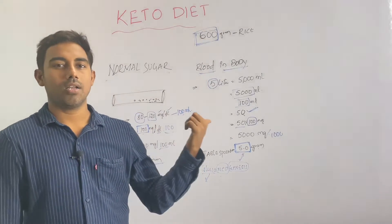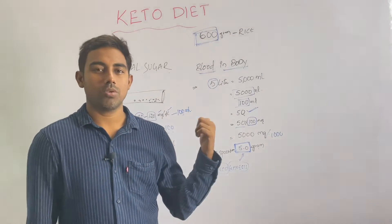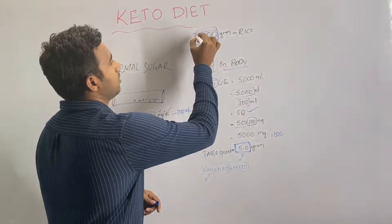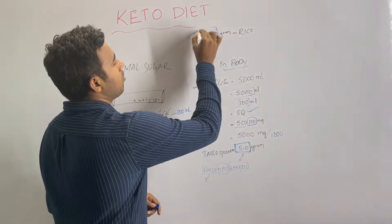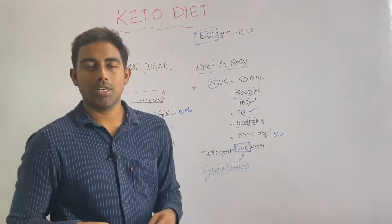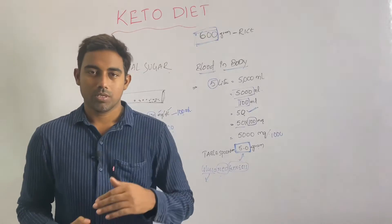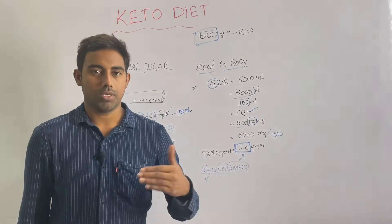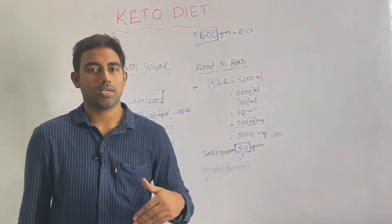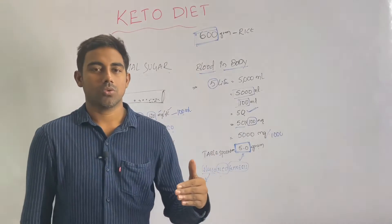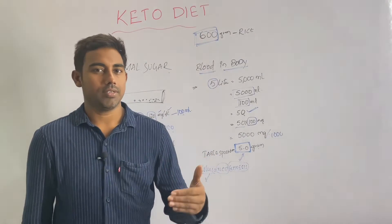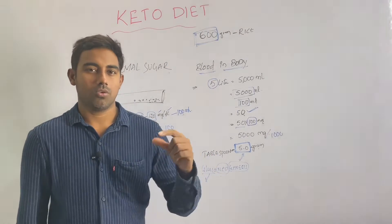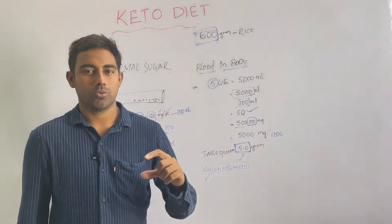Most people consume far more — around 600 grams of sugar equivalents from snacks, cakes, ice creams, sweets, and in the evening: honey, tea with 3 to 4 tablespoons of sugar.